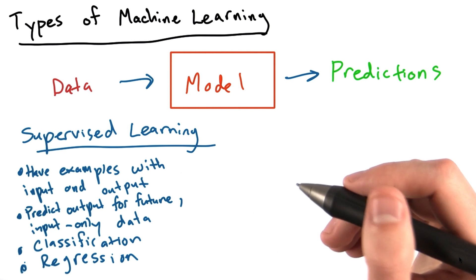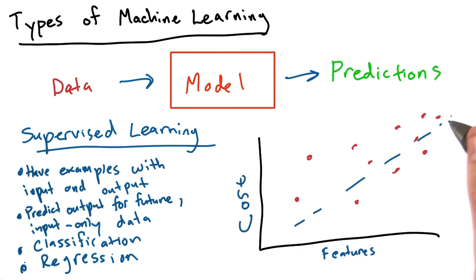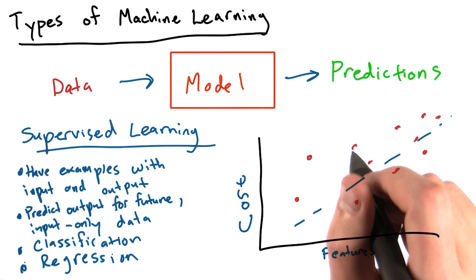We could train a model and then predict how much a future house will sell for, given we know all the same parameters. This is an example of regression.